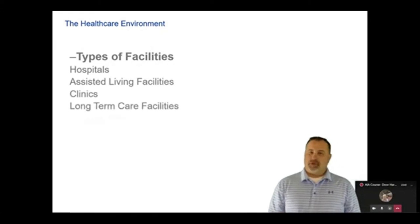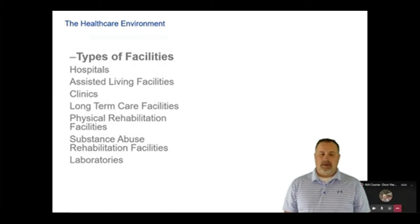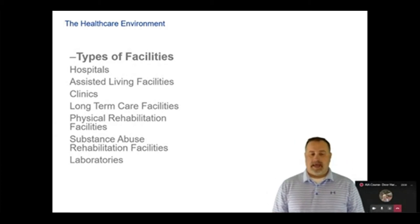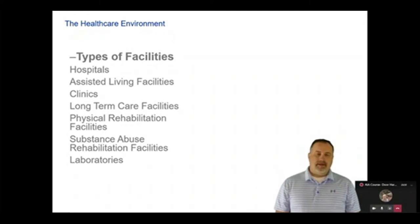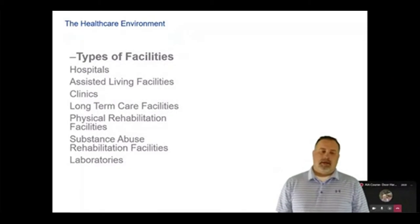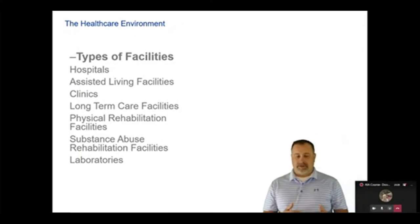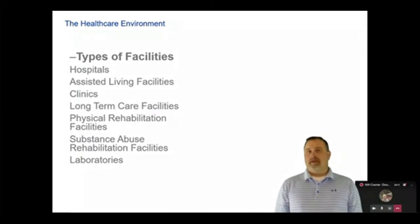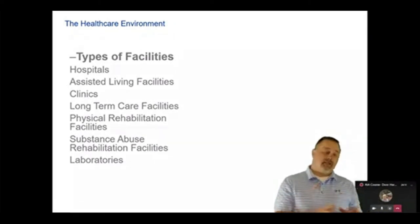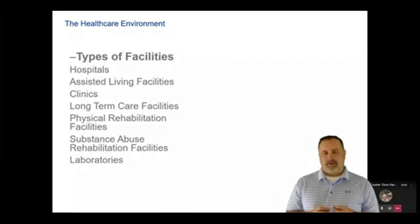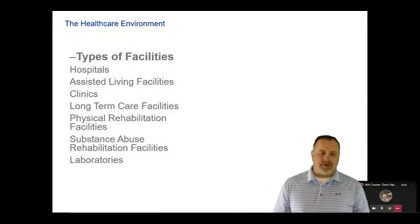The types of facilities we're covering include hospitals, assisted living, clinics, long-term health, physical rehab, substance abuse facilities, and laboratories. All of these are going to work in the healthcare environment. Each of them will have some very common hardware, but some will also have very unique hardware. Today we're going to discuss each one of them, going over both the unique and the common hardware pieces so we can understand them.